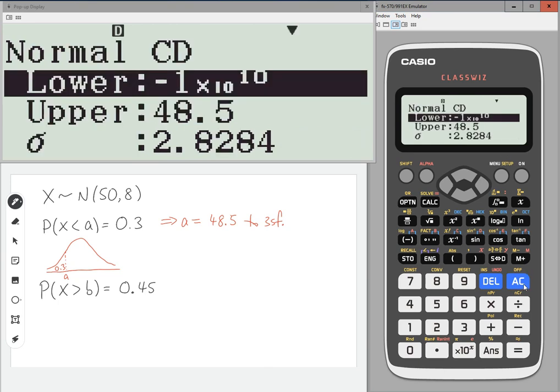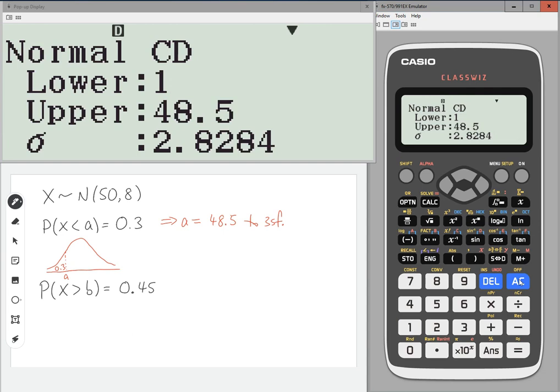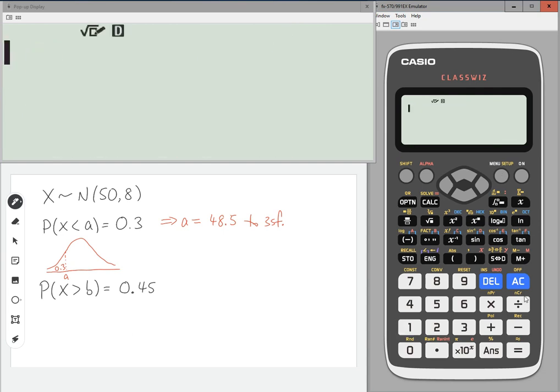So let's go back to menu 1. Now for the second example, probability of X being greater than B is 0.45. So again, draw a diagram.